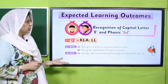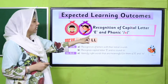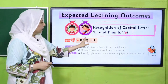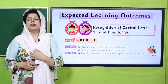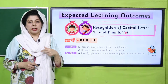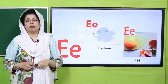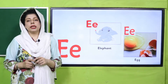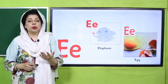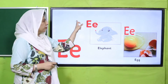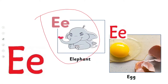This is the topic: recognition of capital letter E and phonic skills — listening, coloring, writing, speaking, and reading are all involved. Today you can see: who remembers what this is? This is a very happy little baby elephant, and this is a picture of a broken egg.